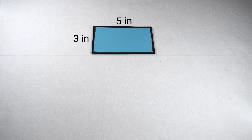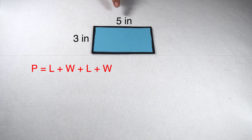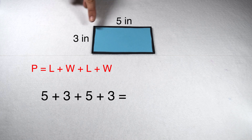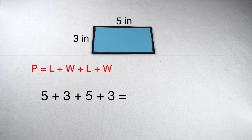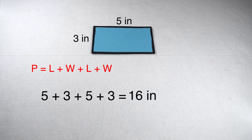Let's start by finding the sum of all of our edges. When we do that, I would add 5 plus 3 plus 5 plus 3. This would give me a total of 16 inches for my perimeter.